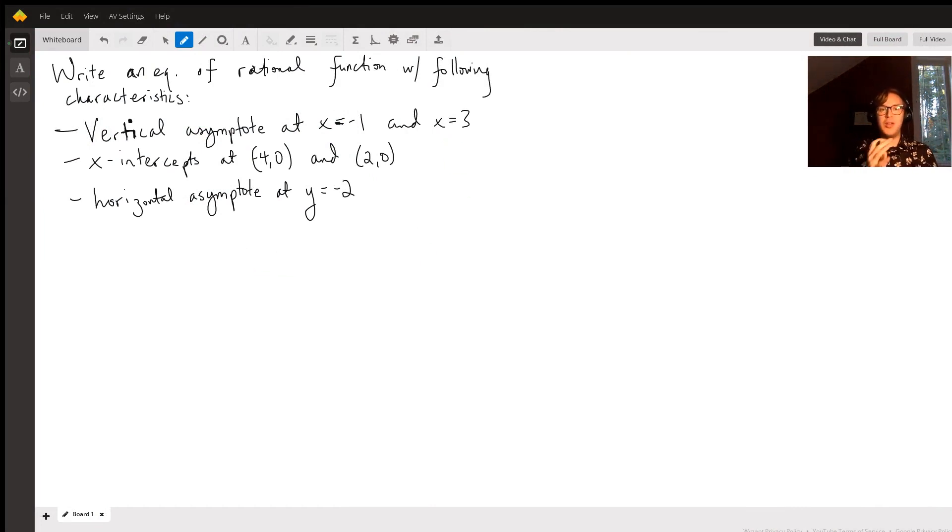We want an equation of a rational function with these characteristics listed. So let's just call our function f of x, and let's let it equal to, and we're just going to put a big giant fraction bar here.